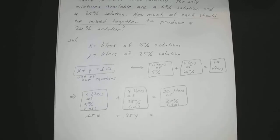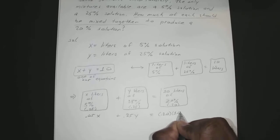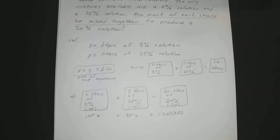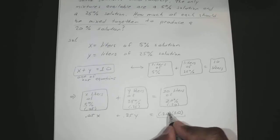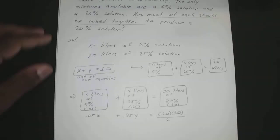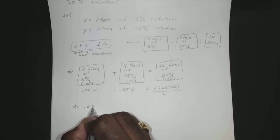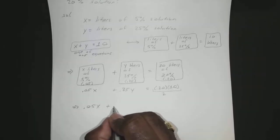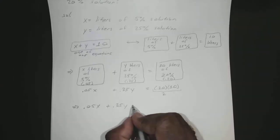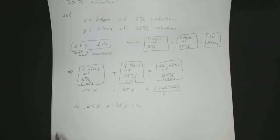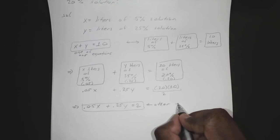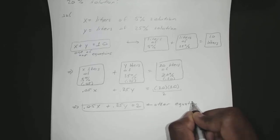That equals twenty percent of 10 liters, so 0.20 times 10. We can simplify that because 0.20 times 10 is just 2. So that gives us our second equation: 0.05X plus 0.25Y equals 2.